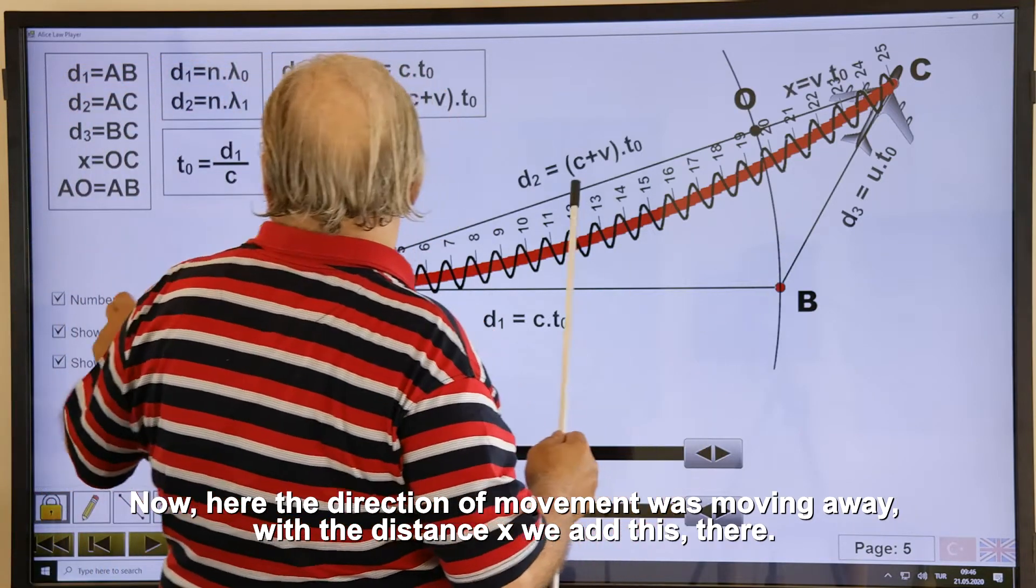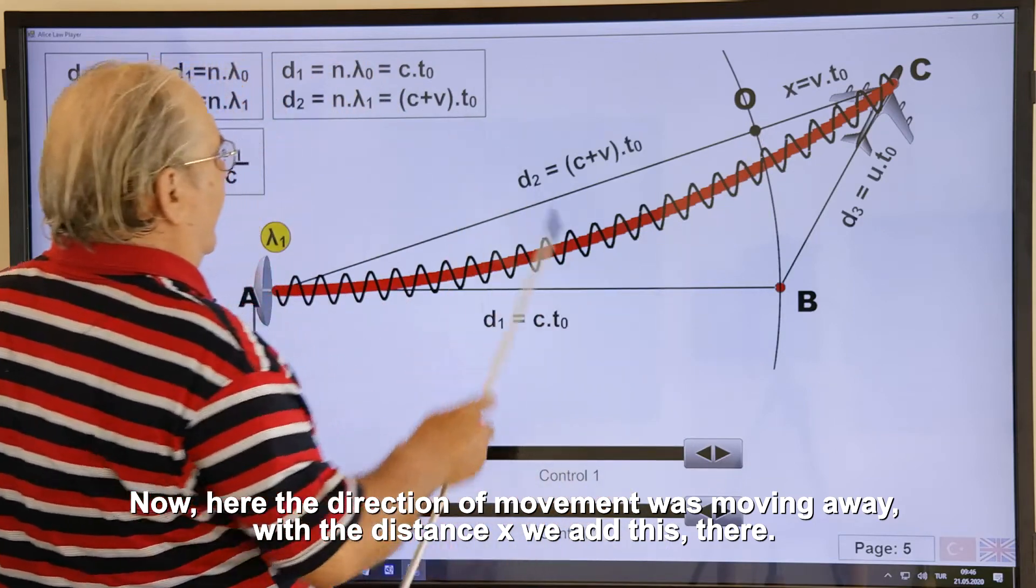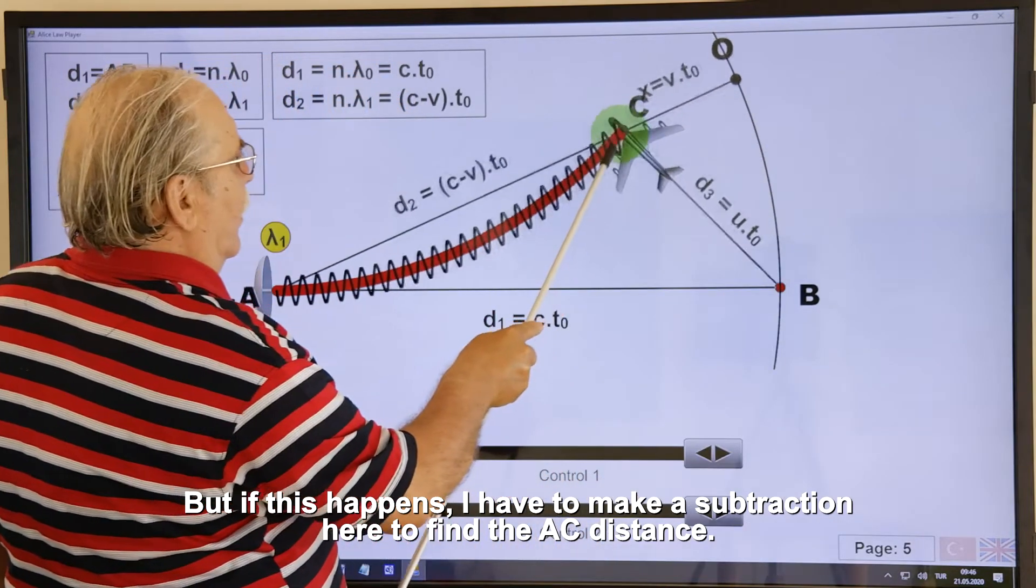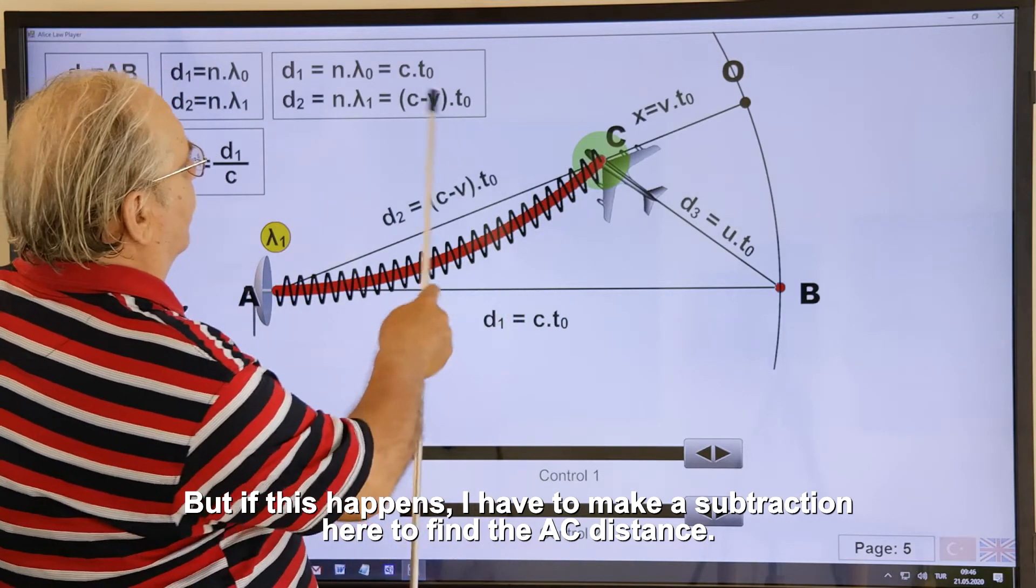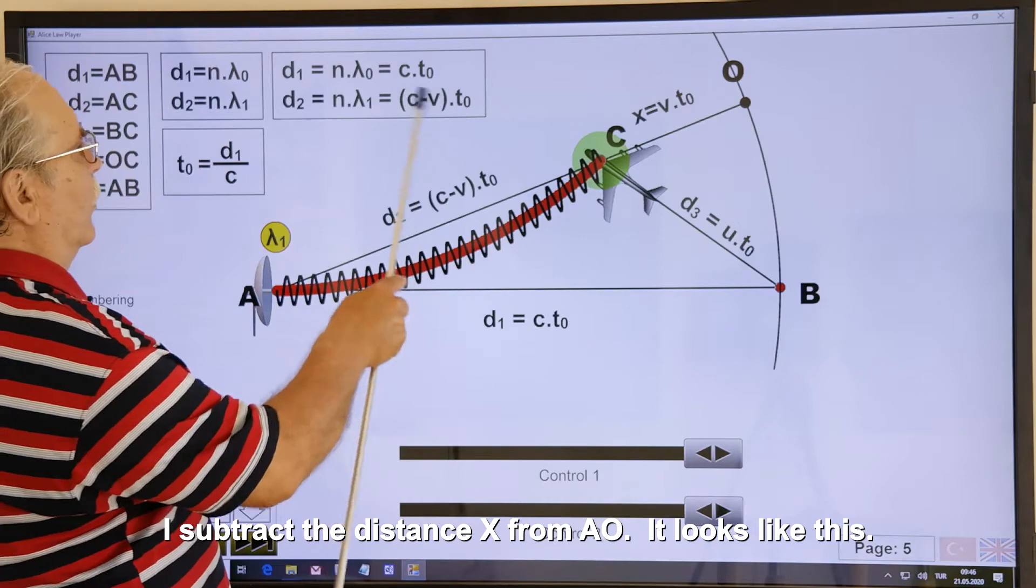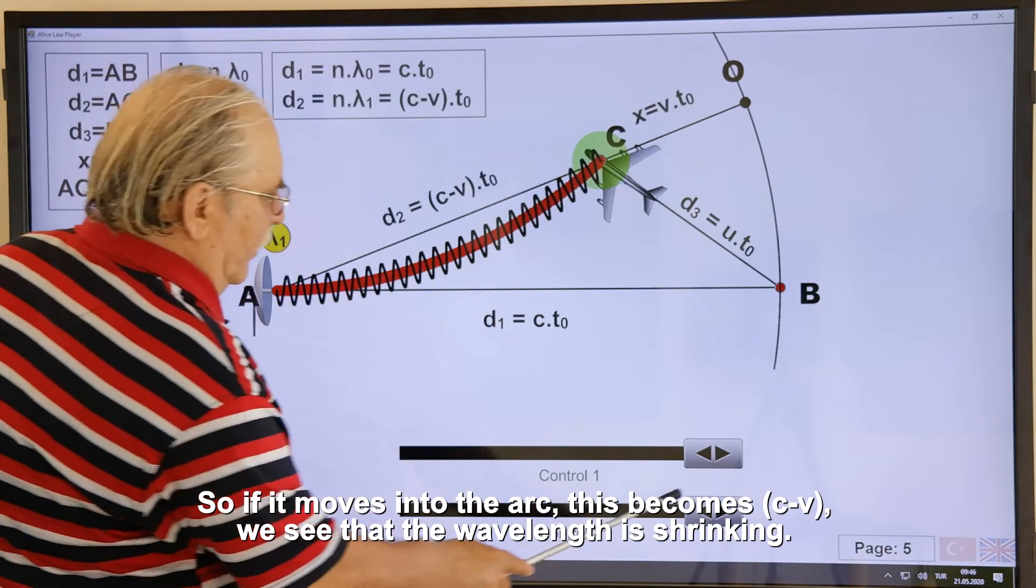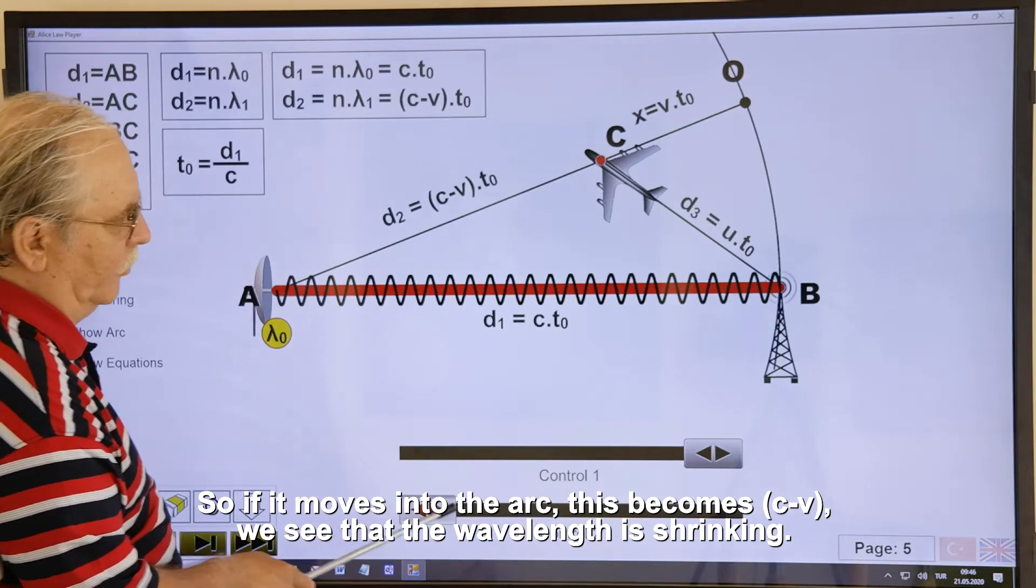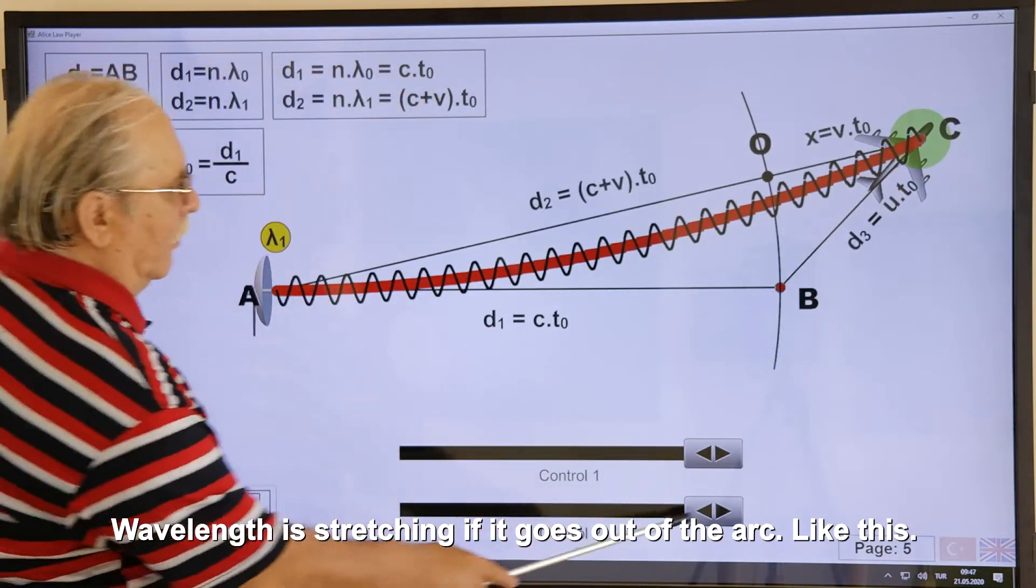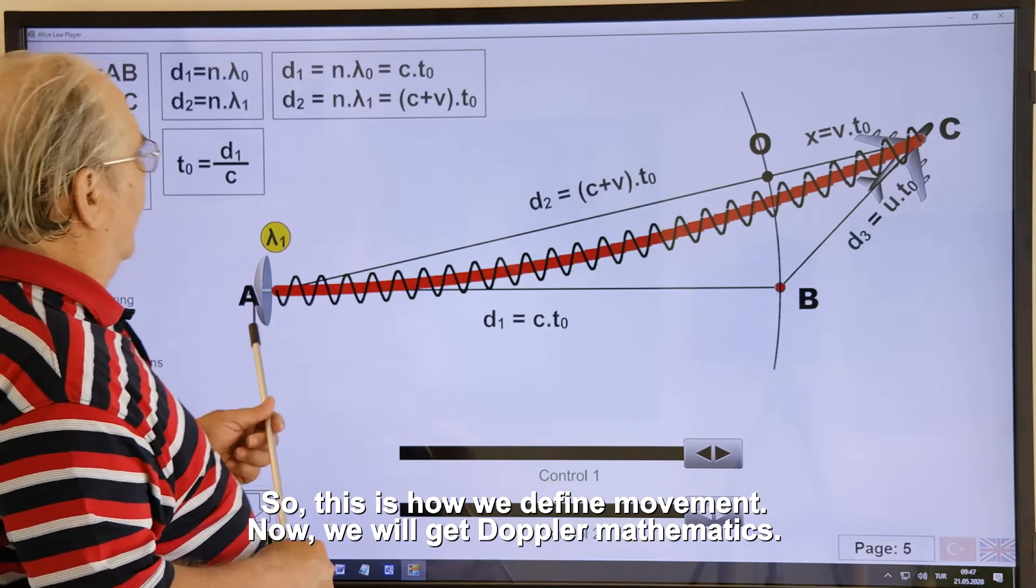Now, here the direction of movement was moving away. With the distance x we add this. There. But if this happens, I have to make a subtraction here to find the AC distance. I subtract the distance x from AO. It looks like this. So if it moves into the arc, this becomes C minus V we see. That the wavelength is shrinking. Wavelength is stretching, if it goes out of the arc. Like this. So, this is how we define movement.